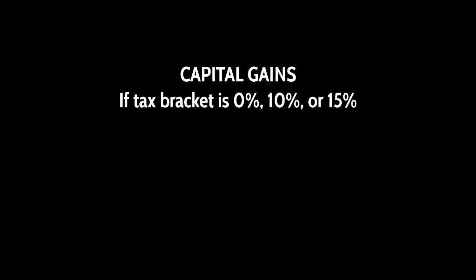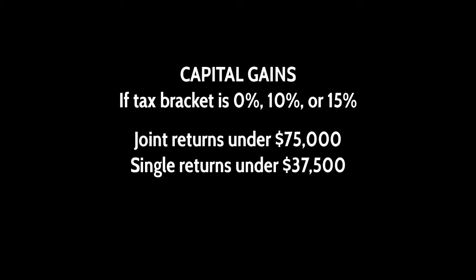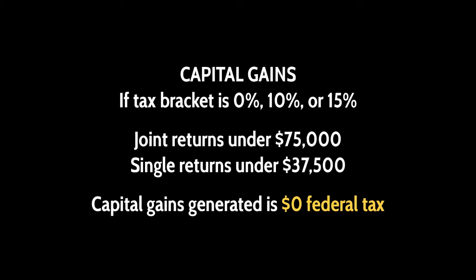Number one: Capital gains. If your tax bracket is in the 0, 10, or 15 percent—that's under $75,000 for joint returns and under $37,500 for single returns—then any capital gains generated is zero federal tax. If you're under that threshold and can be proactive about generating some capital gains, you can get a zero tax deal, which is great.